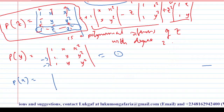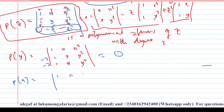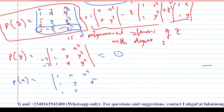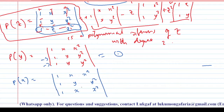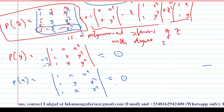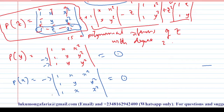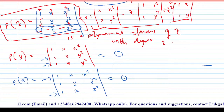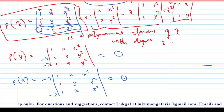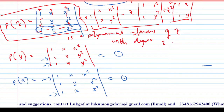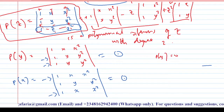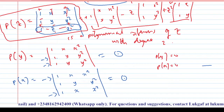One of the properties of determinants is that when two rows of a matrix are equal, the determinant is zero. So p(y) equals zero. Likewise, I can find p(x): wherever I see z I replace it with x, giving rows 1, x, x squared; 1, y, y squared; 1, x, x squared. Row 1 and row 3 are equal, so p(x) equals zero.